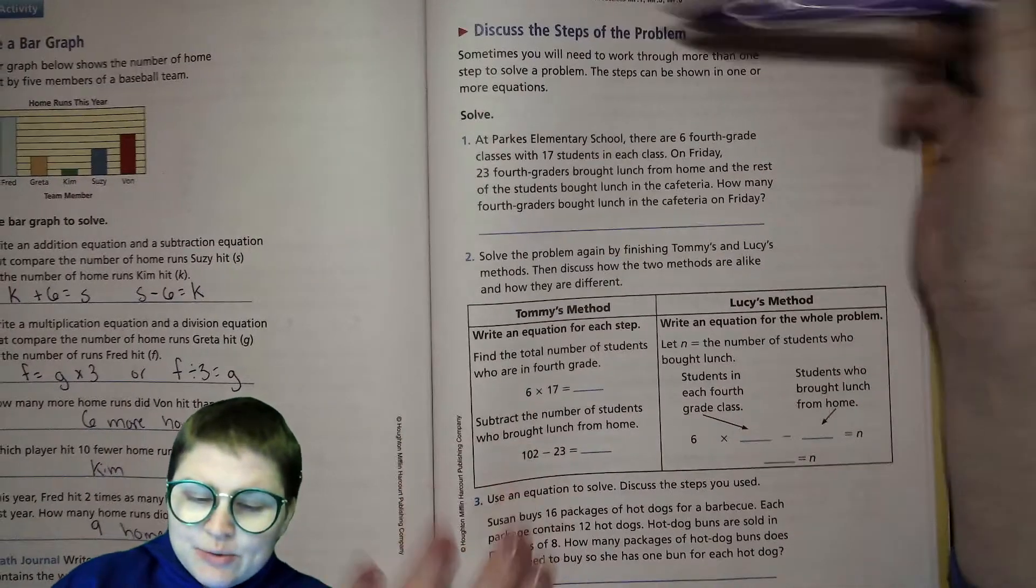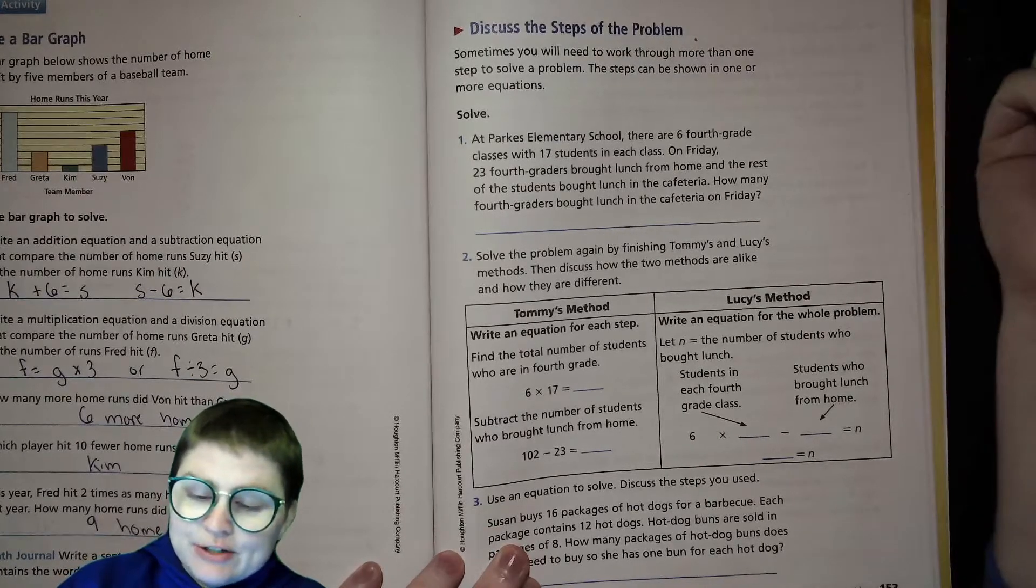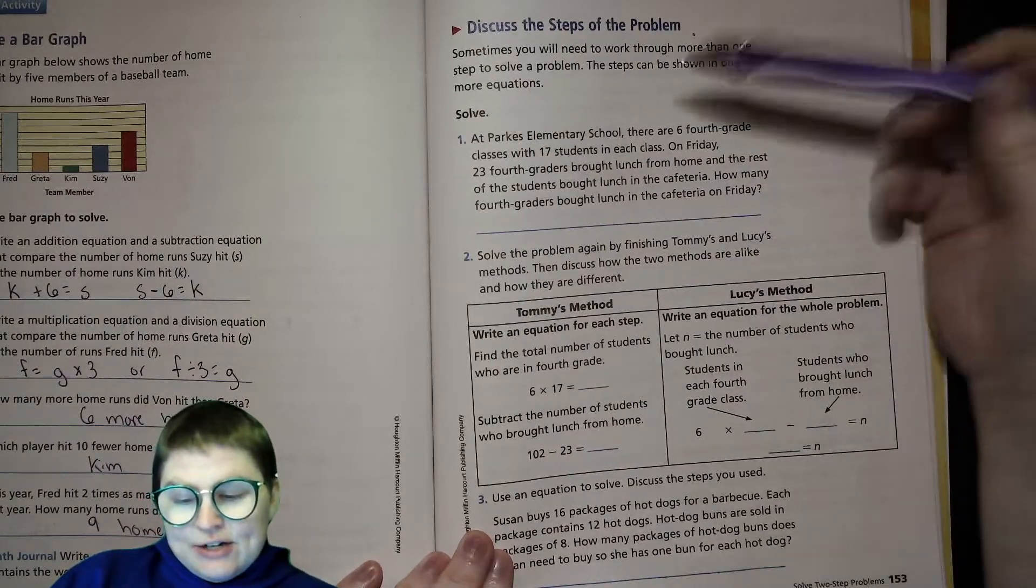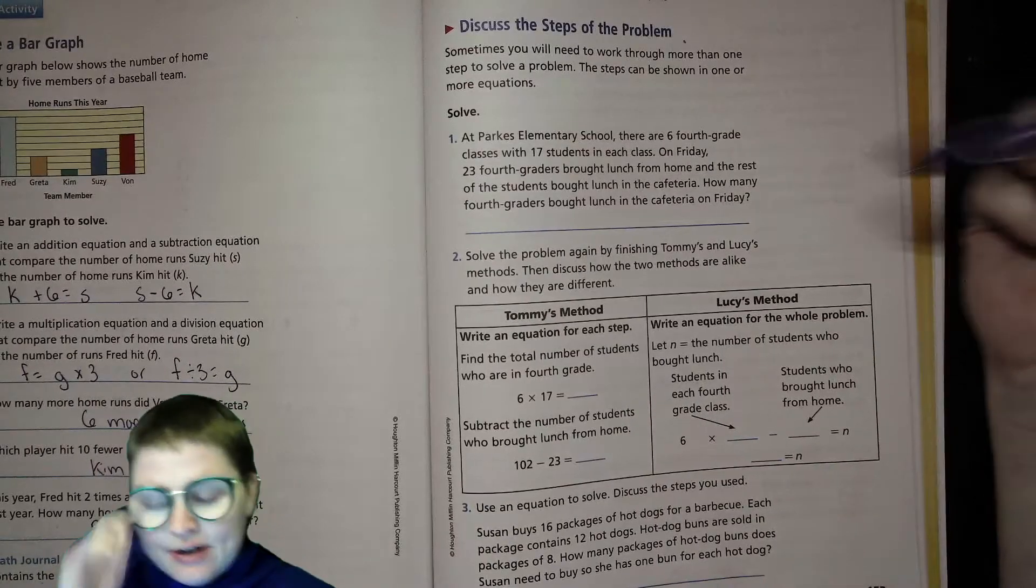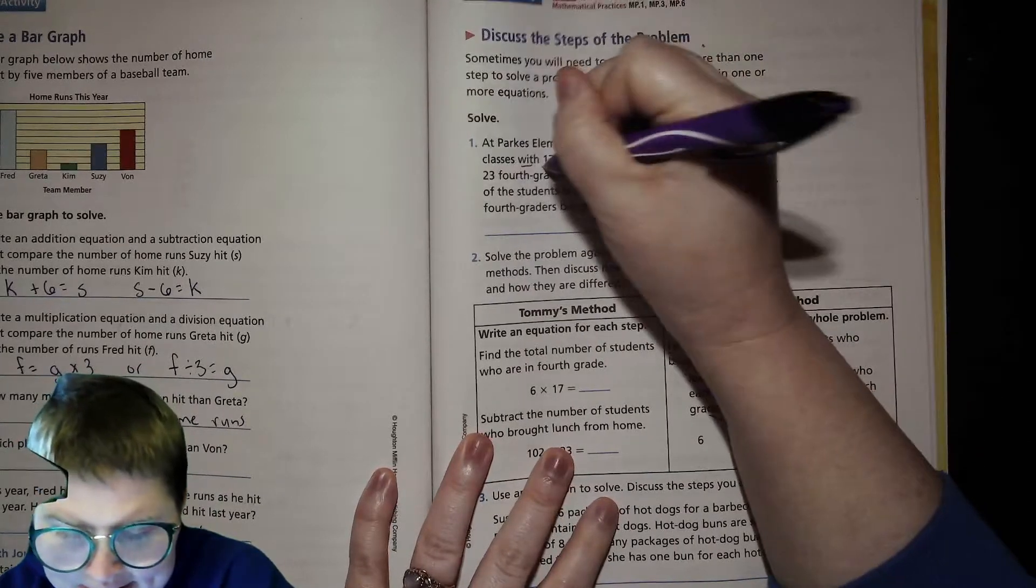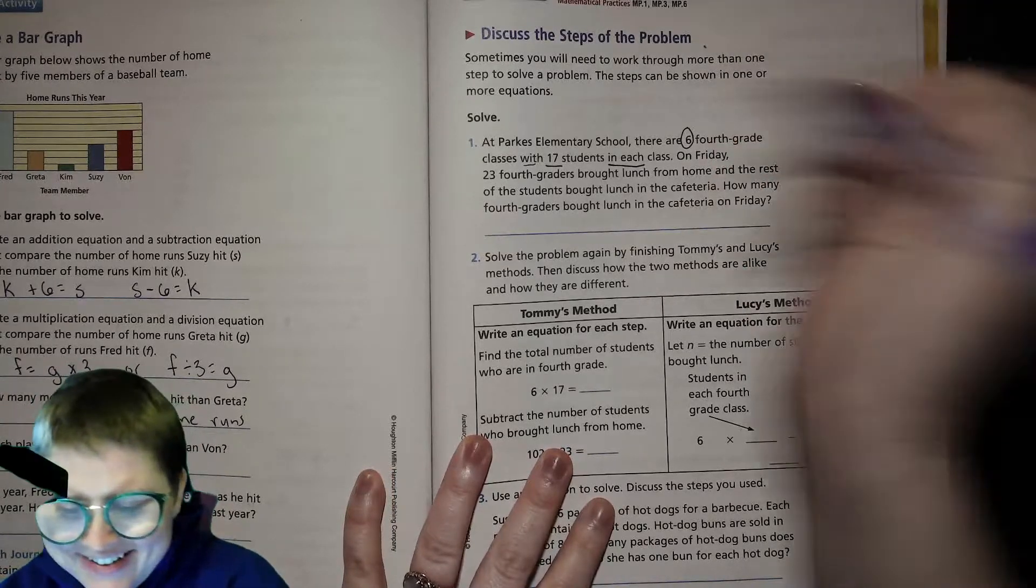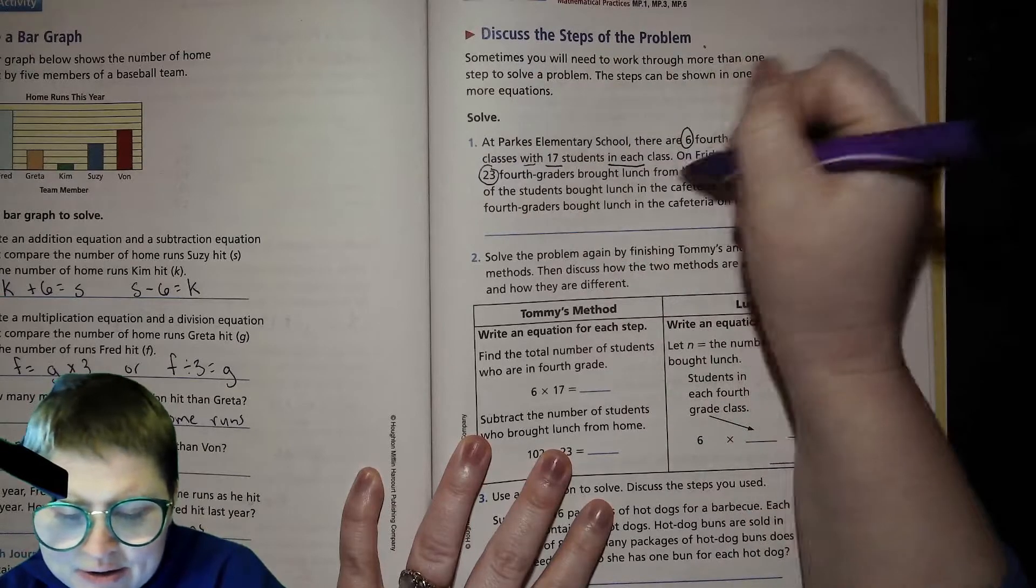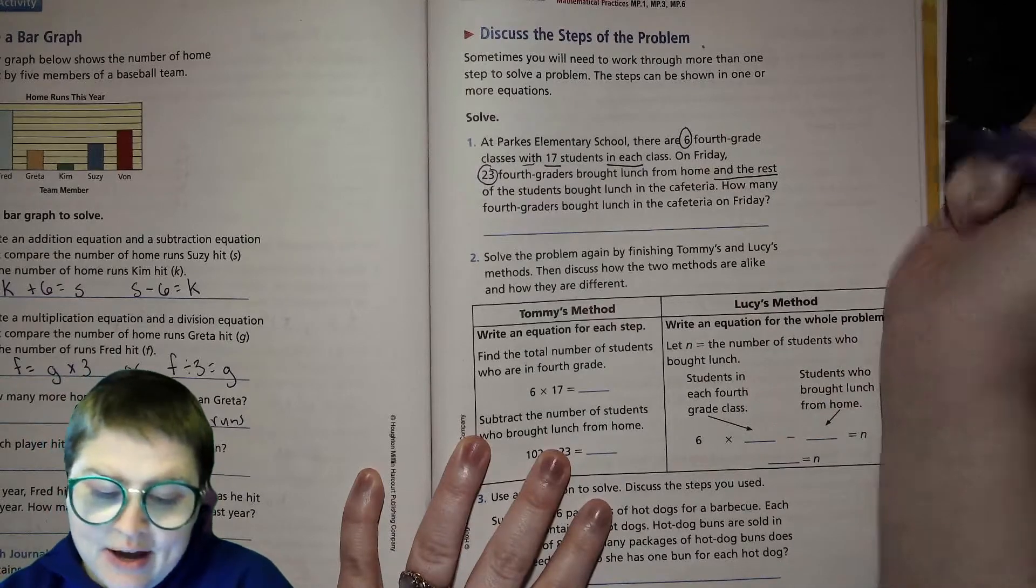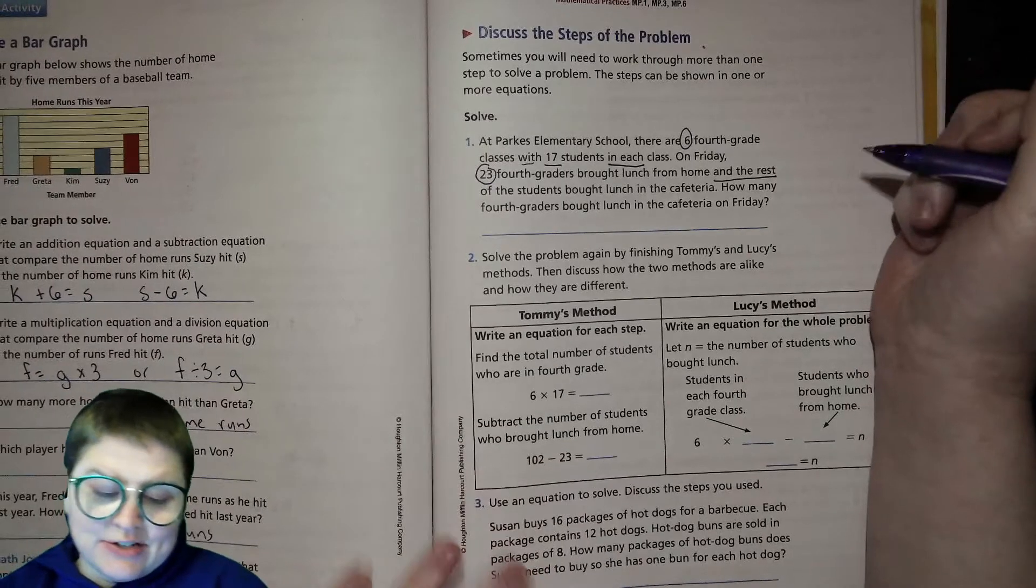It says here sometimes you'll need to work through more than one step to solve a problem. The steps can be shown in one or more equations. So we're going to solve this and then we're going to look at their strategies. At Parks Elementary School, there are six fourth grade classes with 17 students in each class. On Friday, 23 fourth graders brought lunch from home and the rest of the students bought lunch in the cafeteria. How many fourth graders bought lunch in the cafeteria on Friday?